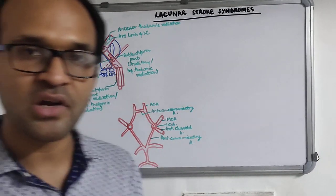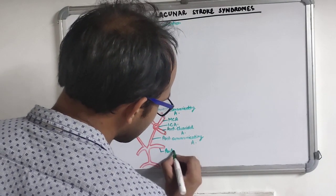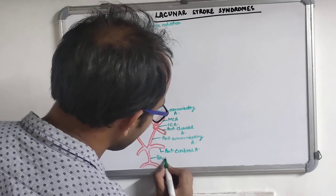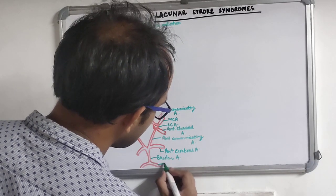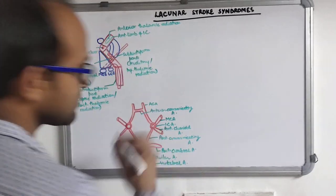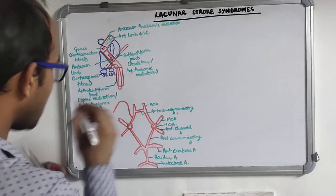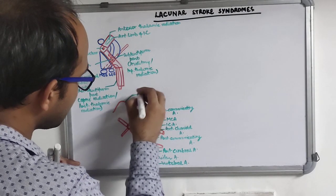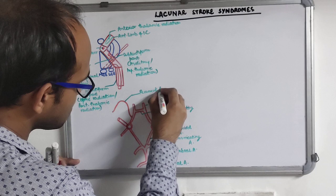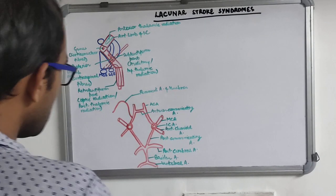There are basically five branches of the internal carotid artery: anterior cerebral artery, middle cerebral artery, posterior communicating artery, anterior choroidal artery, and ophthalmic artery. The posterior cerebral artery originates from the bifurcation of the basilar artery, which is formed from the fusion of the vertebral arteries. The anterior cerebral artery gives off a branch known as the recurrent artery of Hübner. Now I will tell you the blood supply of the internal capsule.